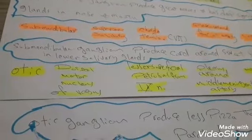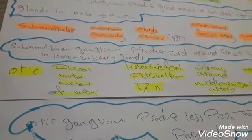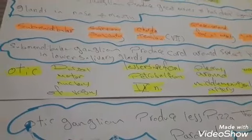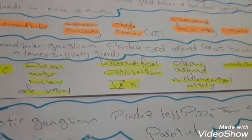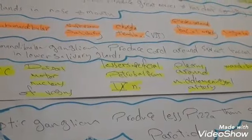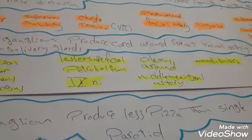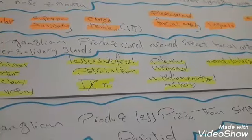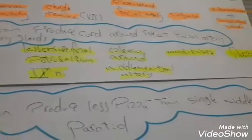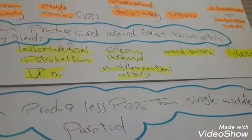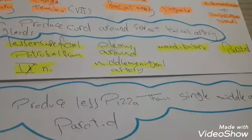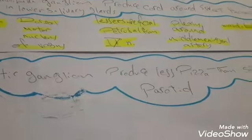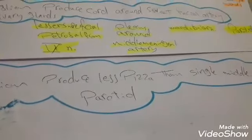Finally, the otic ganglion. Its nucleus is the dorsal motor nucleus of the vagus. The parasympathetic root is the lesser superficial petrosal nerve from the glossopharyngeal nerve. The sympathetic root is the nerve from the plexus around the middle meningeal artery. The sensory root is the mandibular nerve. The target is the parotid gland.